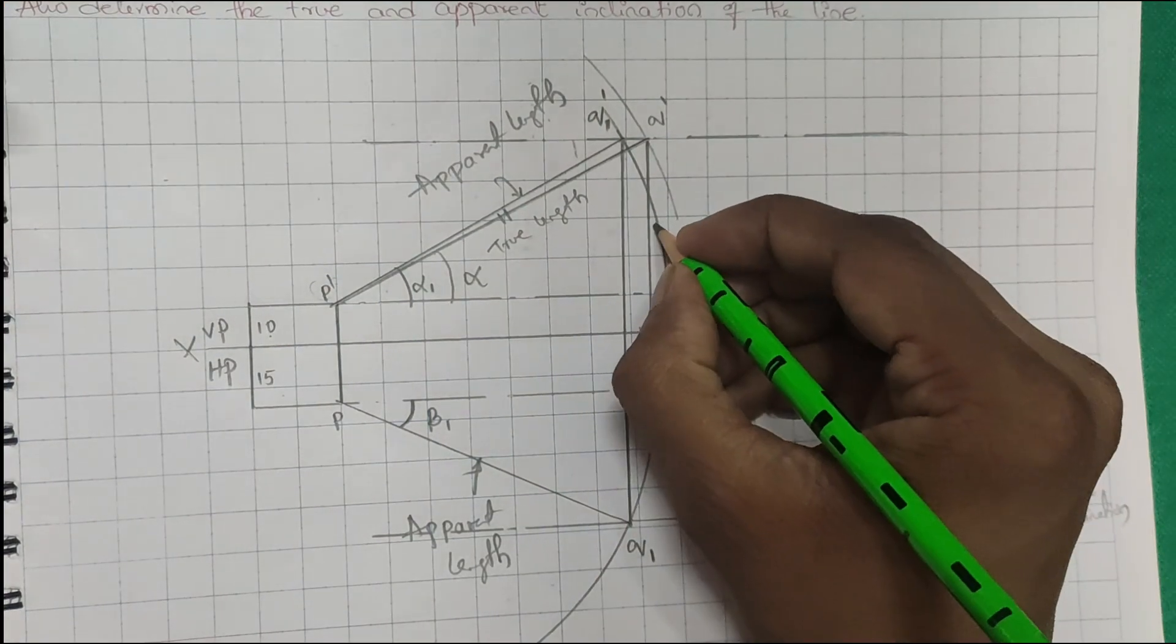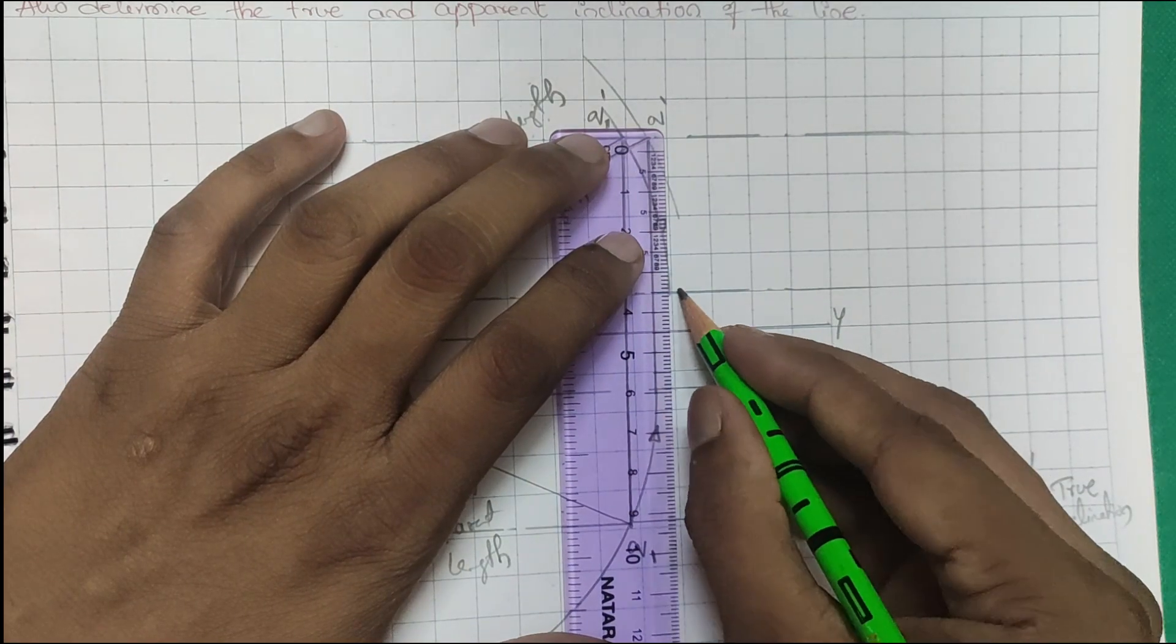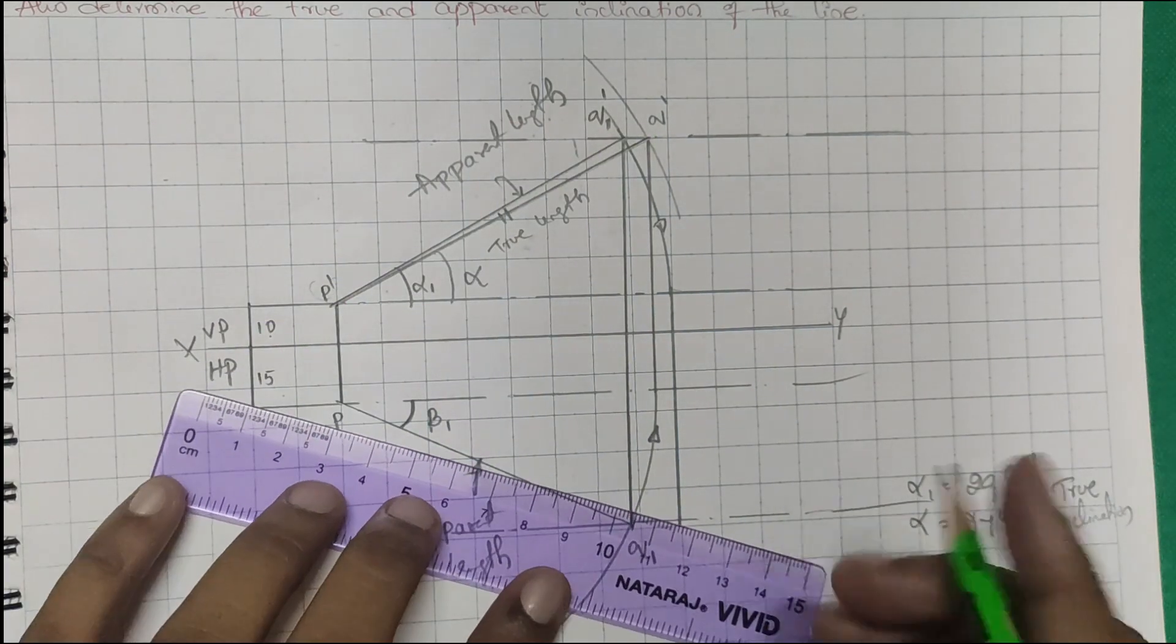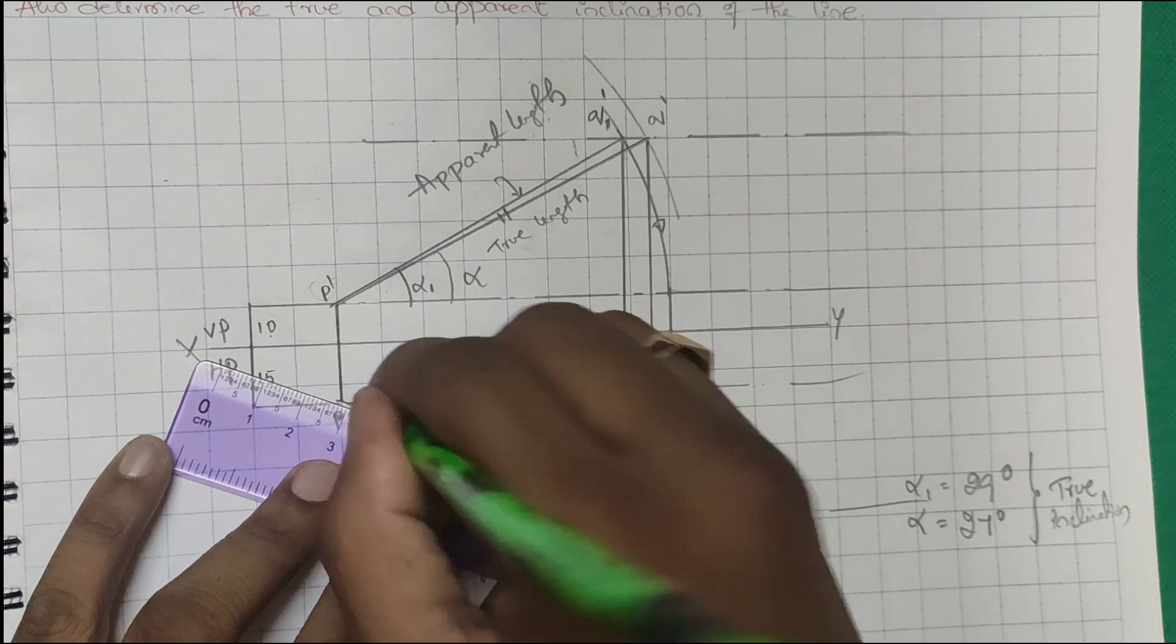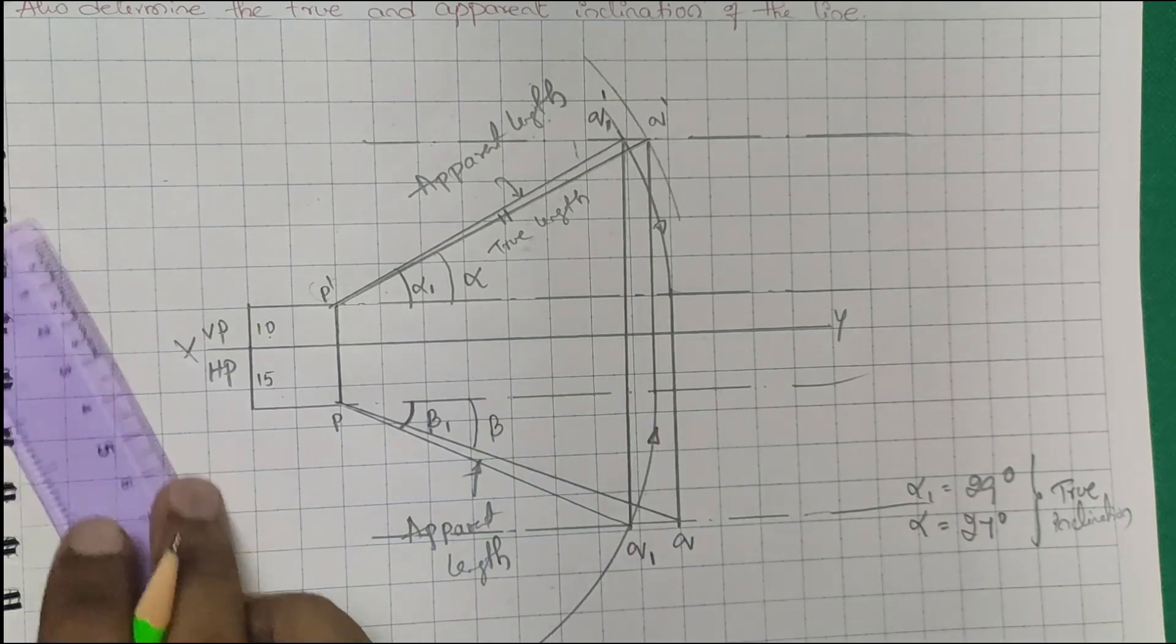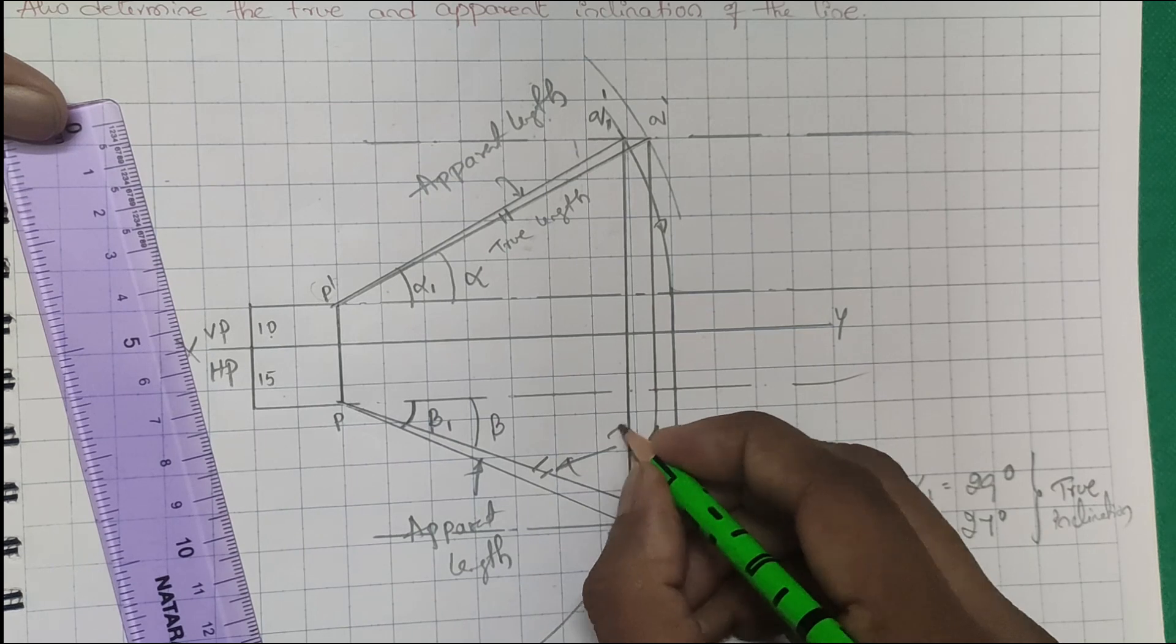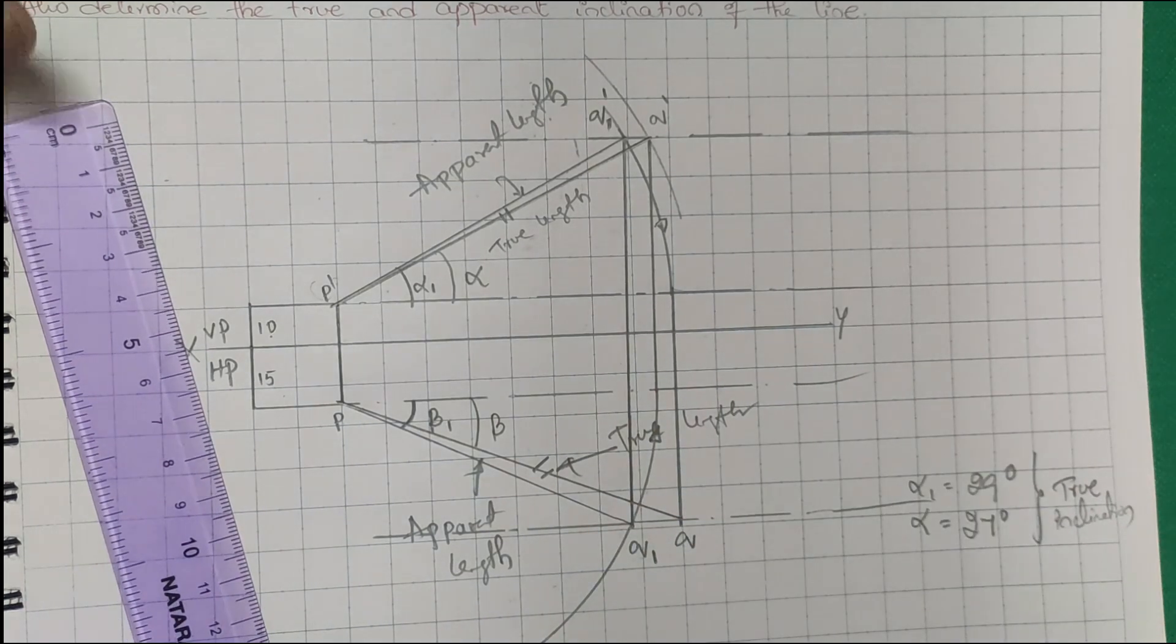Next you have to join this. This is the true length and true inclination. Beta is the true inclination and this is the true length. You have to be very careful.